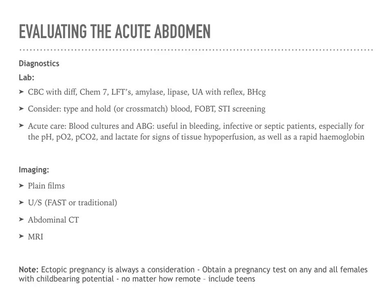For diagnostics of the acute abdomen, start with laboratory studies. If worried about bleeding, check a CBC with differential, especially if concerned about sepsis — send blood cultures and a blood gas, which may indicate metabolic acidosis from tissue hypoperfusion, and watch for a rapidly dropping hemoglobin. Look at other GI studies such as the complete metabolic profile. Check amylase and lipase for pancreatitis. Check urine for renal issues, and obtain a pregnancy test to rule out ectopic pregnancy.